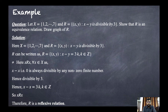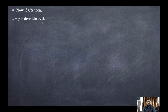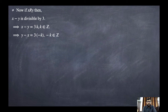For symmetry: if x is related to y, then by definition x minus y is divisible by 3, so x minus y equals 3k where k belongs to Z. Multiplying by minus one gives y minus x equals 3(−k), and since −k also belongs to Z, y is related to x. Hence R is a symmetric relation.